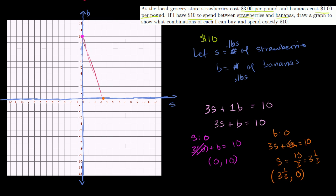This line shows all possible combinations of pounds of strawberries and bananas I can buy for $10. For example, if I get about 5 pounds of bananas, I can get a little under 2 pounds of strawberries. If I get 3 pounds of strawberries, I can get 1 pound of bananas. Every point on this line represents a combination I can get for $10.